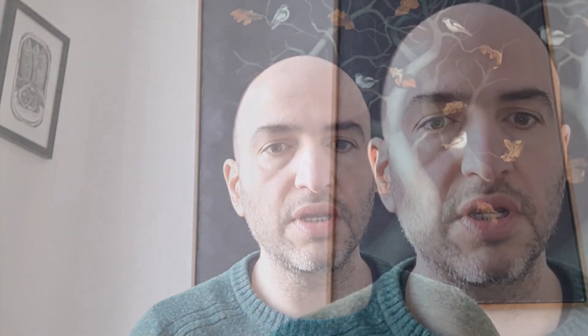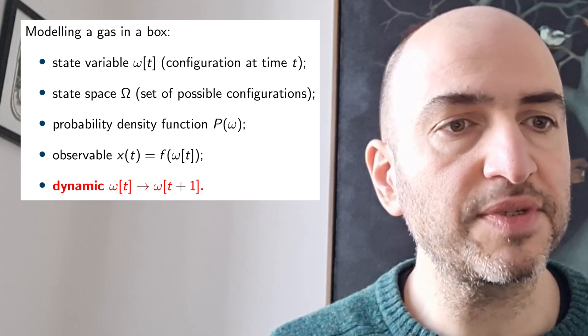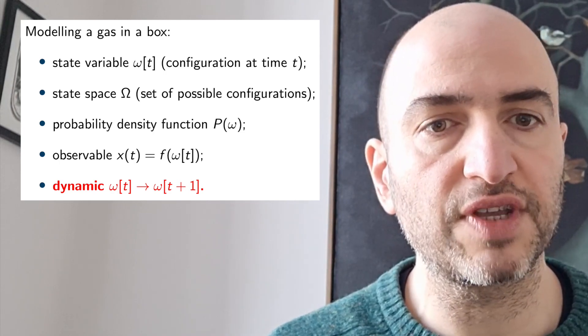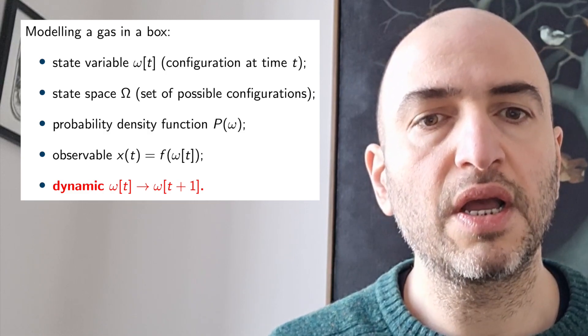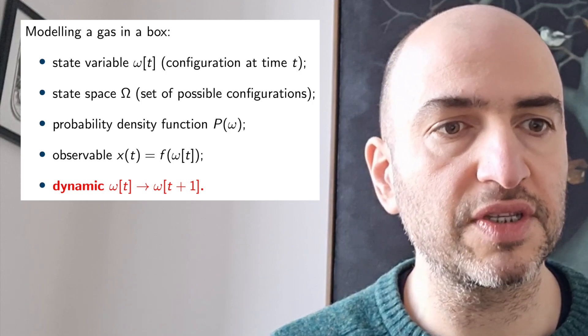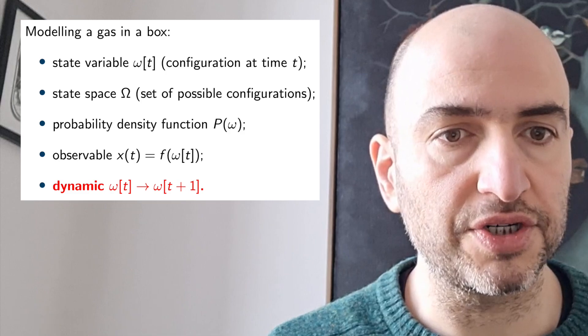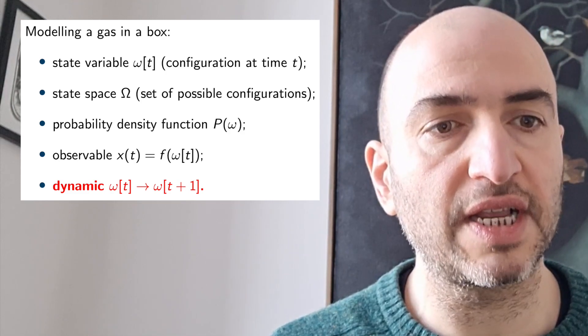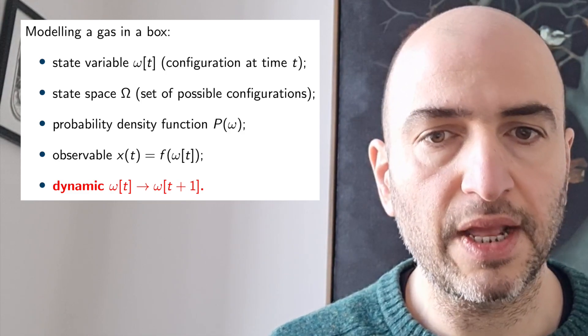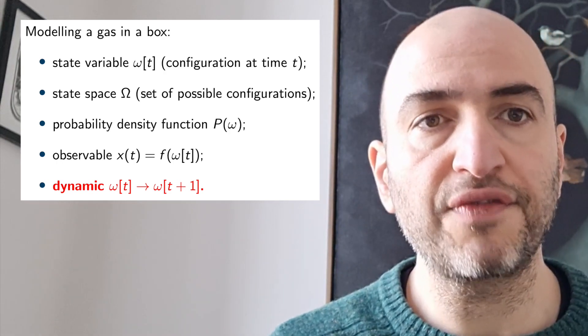Let me give a sketch of how this works. How might a Victorian physicist model a gas in a box? Well, they would start with a state variable, little omega, which describes the configuration of all the components of the gas at some time t. And this is one possible configuration in the set of all possible configurations, the state space, big omega. We have a probability density function which assigns probability densities to states. And the observable we might measure — which could be pressure or volume or temperature — is a function of the state.